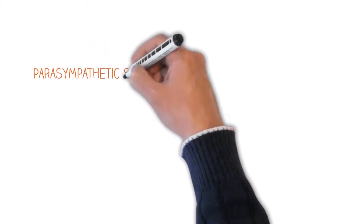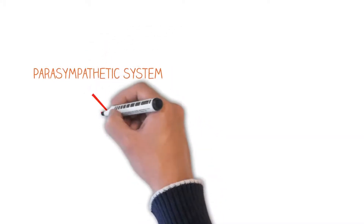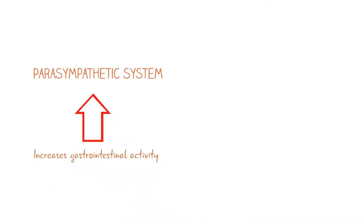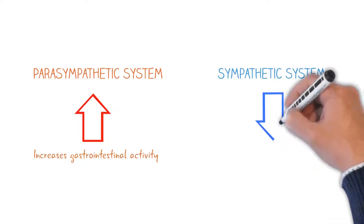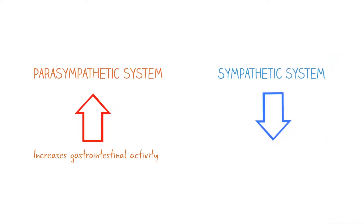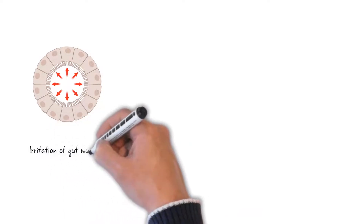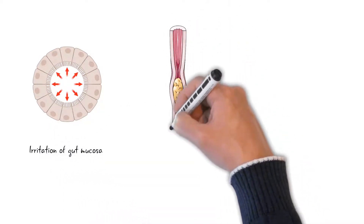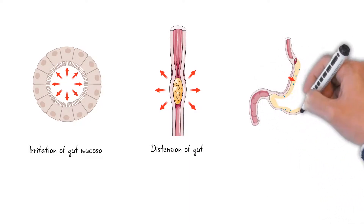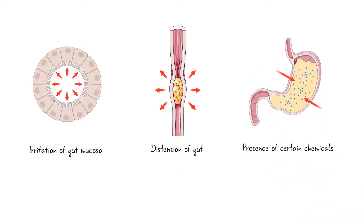The parasympathetic system stimulates the activities of the enteric nervous system, which in turn increases most of the gastrointestinal activities. The sympathetic system produces effects opposite to the parasympathetic system and inhibits most of the activities of the gut. Strong stimulation of the sympathetic system can literally block the movement of food through the gut. Three factors — irritation of the gut mucosa, distension of the gut, and the presence of certain chemical substances in the gut — can stimulate sensory neurons originating from the gut epithelium.